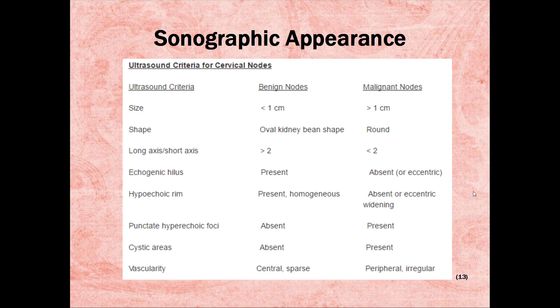In benign, cystic areas are absent, and in malignant they are present. In benign vascularity, it's central and sparse, and in malignant it is peripheral and irregular.